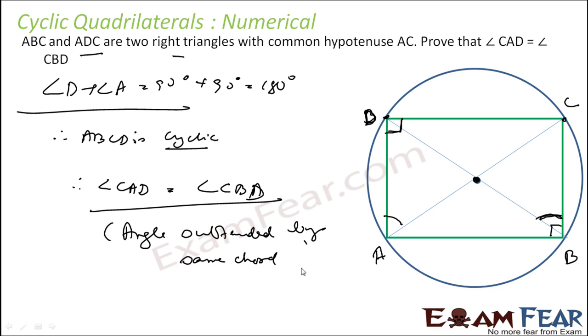So the key insight in this question is: it is given that they are two right triangles, so we first prove that the quadrilateral is cyclic. Once we prove it is cyclic, then we can apply the angle-in-the-same-segment logic.